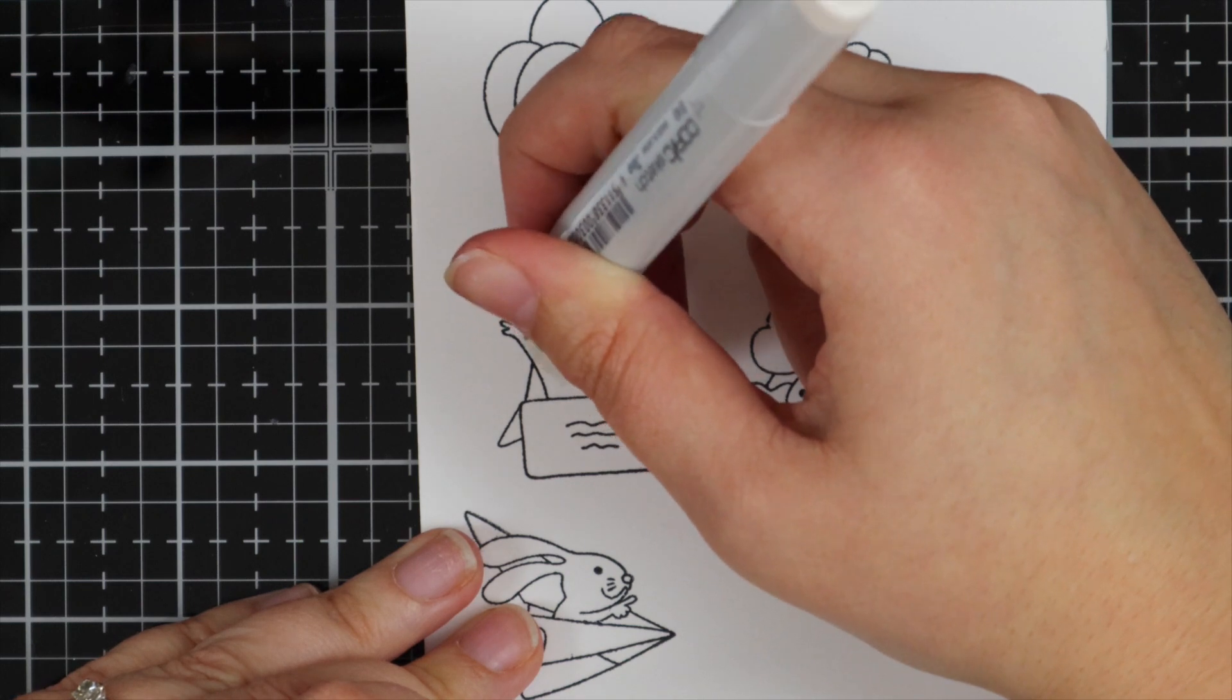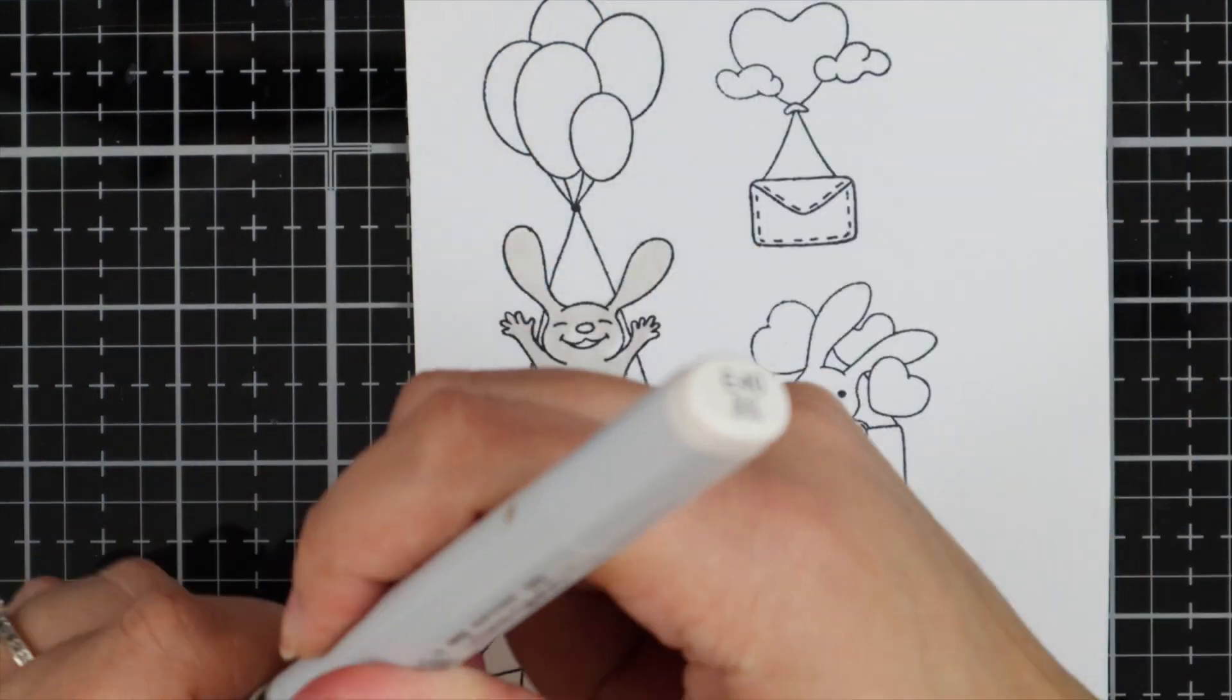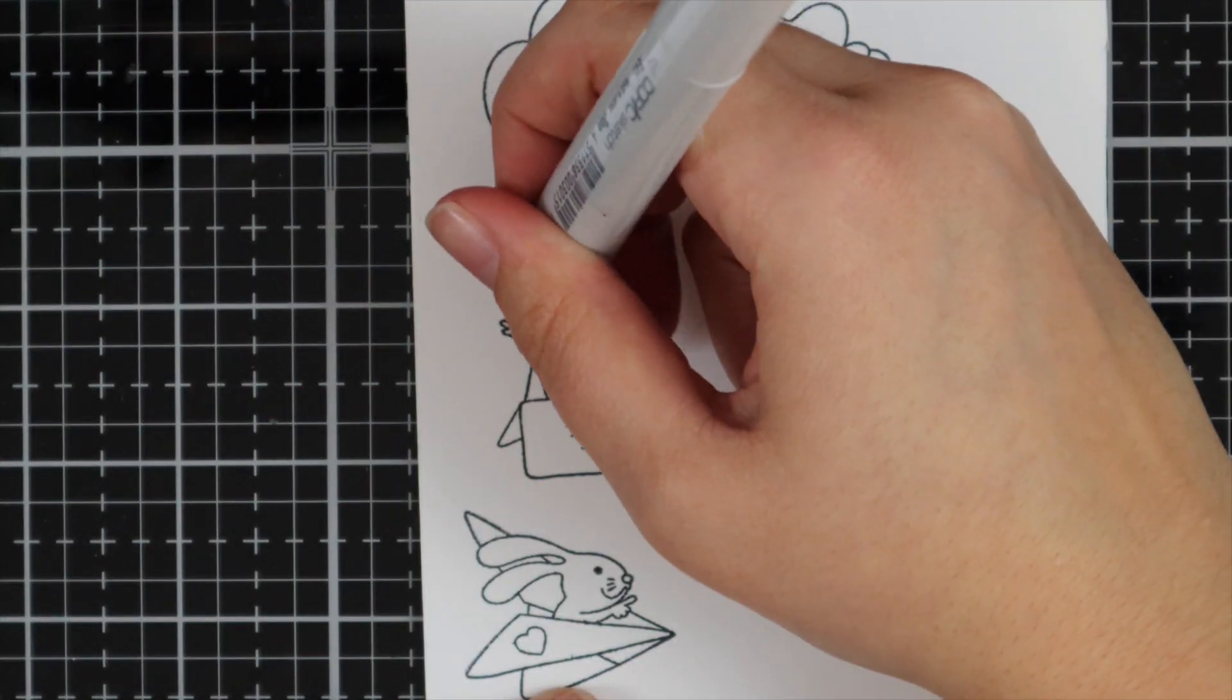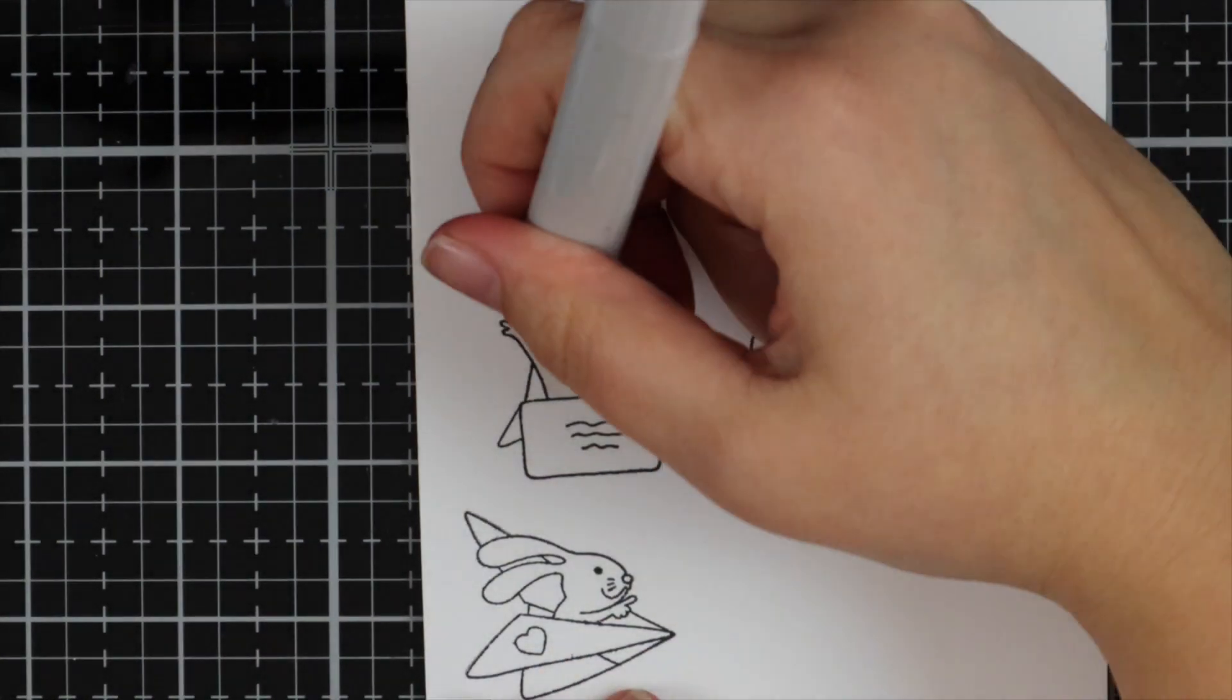So for all the bunny bodies, I've used E40, E41, and E43. So there's only three markers, but of course you can use whichever coloring medium you want to use.